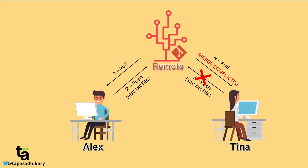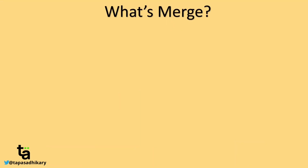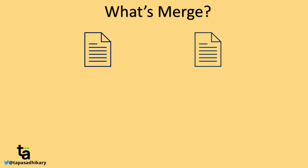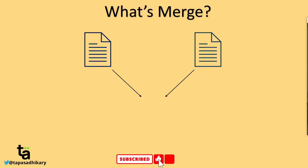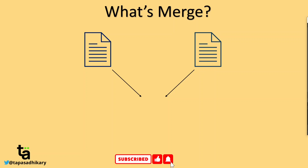Let's understand what exactly merging means and why merge conflicts arise. Git is a version control system, so for a single file there can be multiple versions — one created by me, another by a friend, another by someone else — each having made modifications to it. All these versions ultimately have to be merged to create a new, latest version. If you're a beginner with Git, I've created a beginner Git video and linked it in the description.